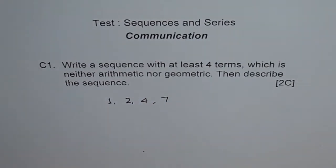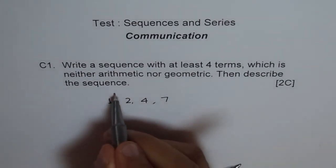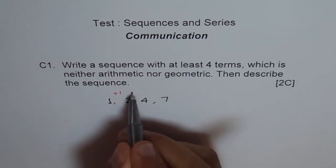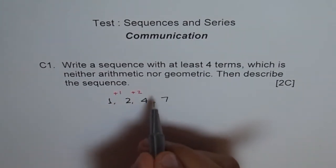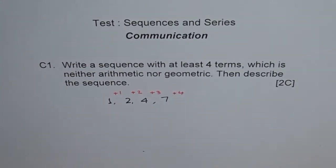What I am trying to do here is for every next term, first I am adding one. Do you see? And then I add two, and then I am adding three, and then I will add four. So like this. So if I do that, I do get a pattern here—that is adding one more each time.